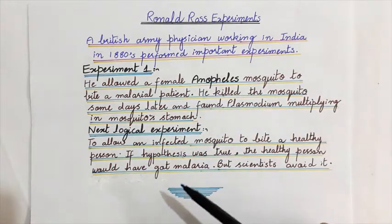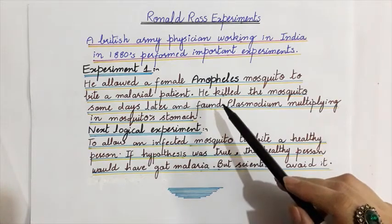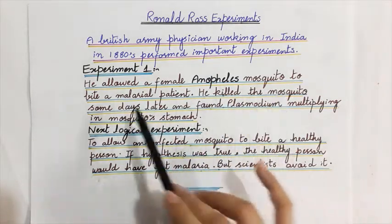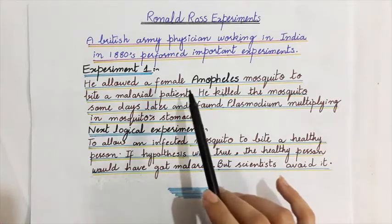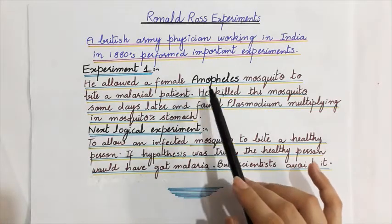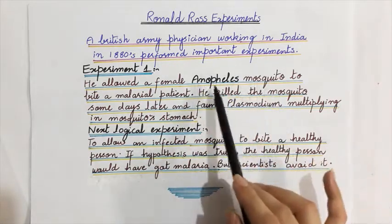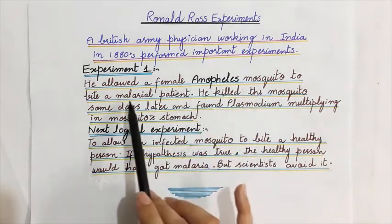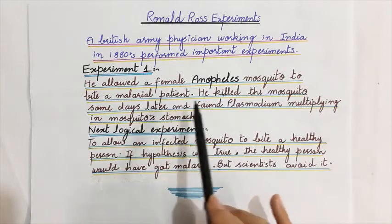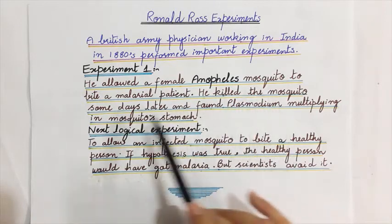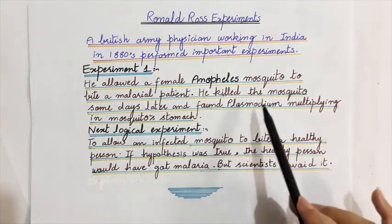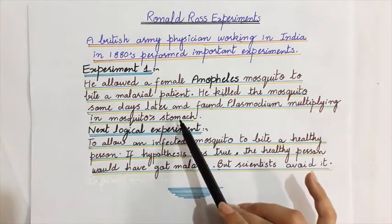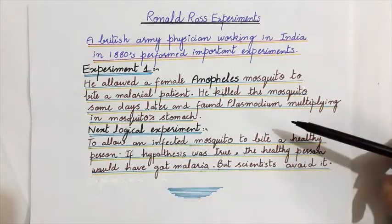In Experiment One, he used human beings. He allowed a female Anopheles mosquito to bite a malarial patient. The mosquito species used was Anopheles. After some days, he killed the mosquitoes and found plasmodium multiplying in the mosquito's stomach.